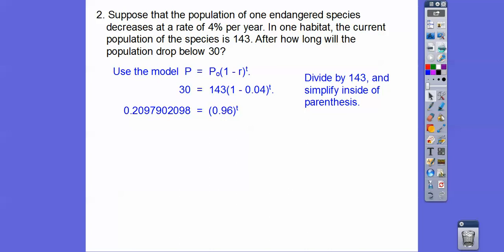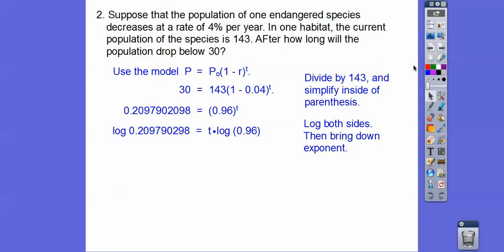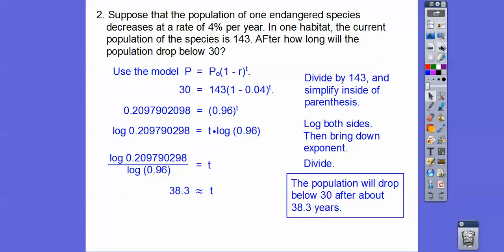We're going to log both sides. When we log both sides, the exponent comes down. Then divide both sides by log(0.96). When we do that and pick up our calculator, we get about 38.3.